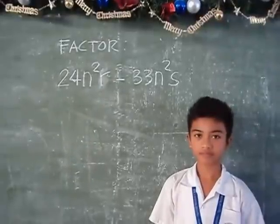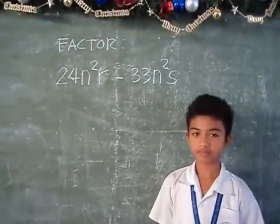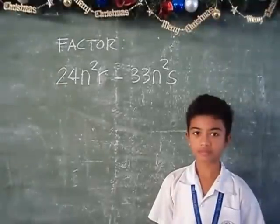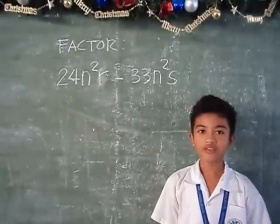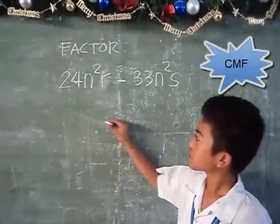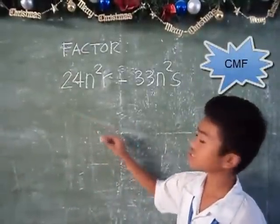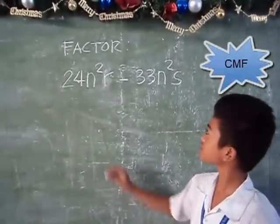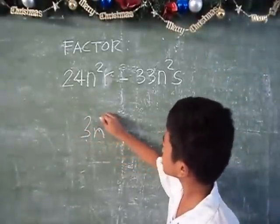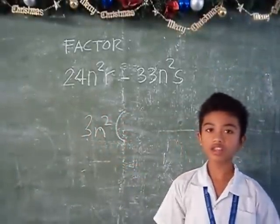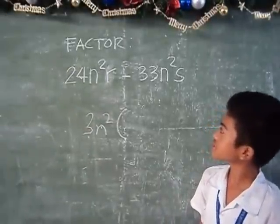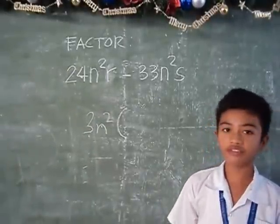Factor 24n²r minus 33n²s. To factor this, find the common monomial factor (CMF). The CMF is 3n², and the other factor is 8r minus 11n.